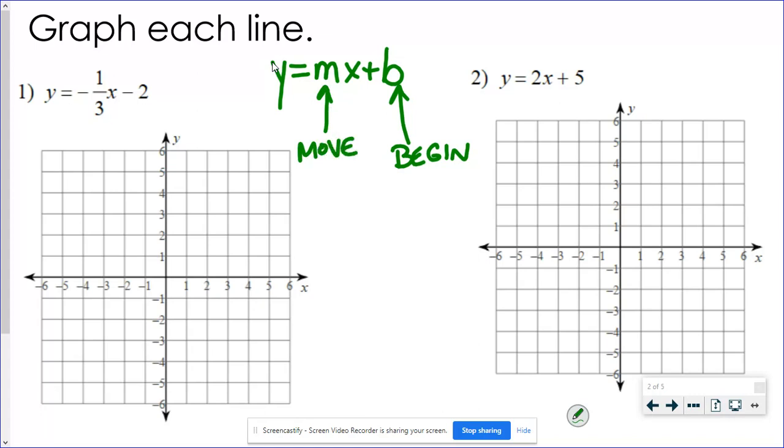So in number one, if I do a keep change, change right there, I can see my y-intercept is negative 2, so I'm starting at negative 2 on the y-axis. A negative 1/3 slope means it has to move downhill. So from this point, I'm going to go down 1 over 3, put a point. Or I can go positive 1, which is up, and left 3, which is negative.